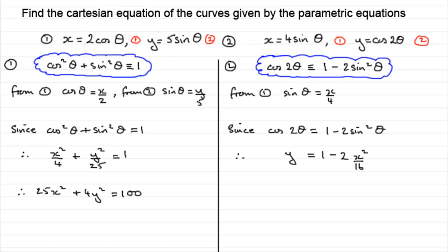The 2 sixteenths now, that cancels. 2 goes into 2 once, that goes into that 8 times. So I would therefore have y equals 1 minus x squared over 8. And I think I'd leave it like that. I've got it in the form y equals, so that seems okay really. If you wanted to, you could times through by 8. You'd get 8y equals 8 minus x squared. Give that as a version as well.